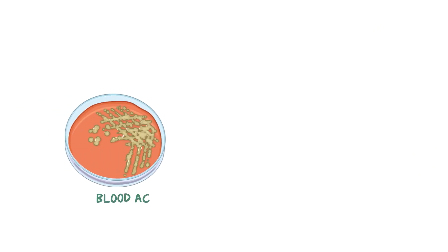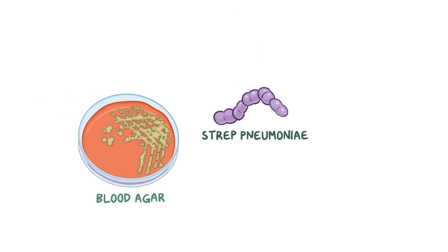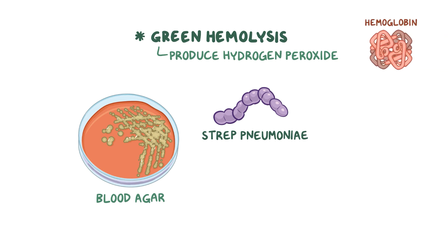When cultivated on a medium called blood agar, strep pneumoniae colonies cause alpha-hemolysis, also called green hemolysis, because they produce hydrogen peroxide, which partially oxidizes the initially red hemoglobin in the blood agar to green methemoglobin.